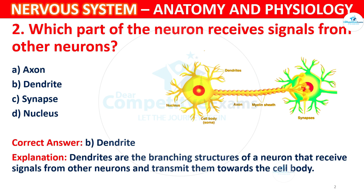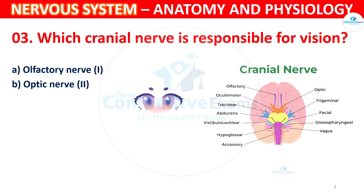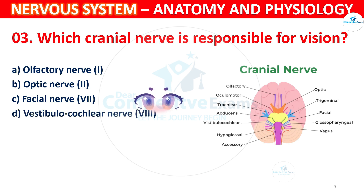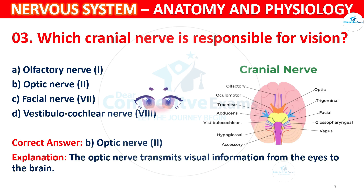Question 3: Which cranial nerve is responsible for vision? Options: A) Olfactory nerve (I), B) Optic nerve (II), C) Facial nerve (VII), D) Vestibulocochlear nerve (VIII). The correct answer is B, Optic nerve II. The optic nerve transmits visual information from the eyes to the brain.